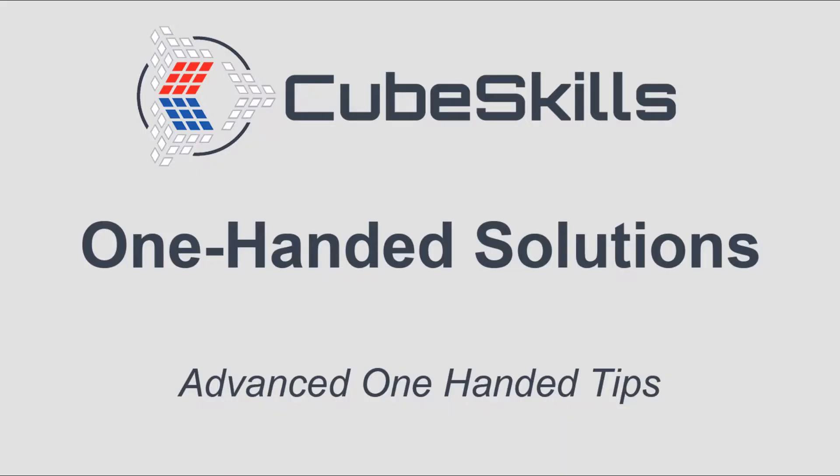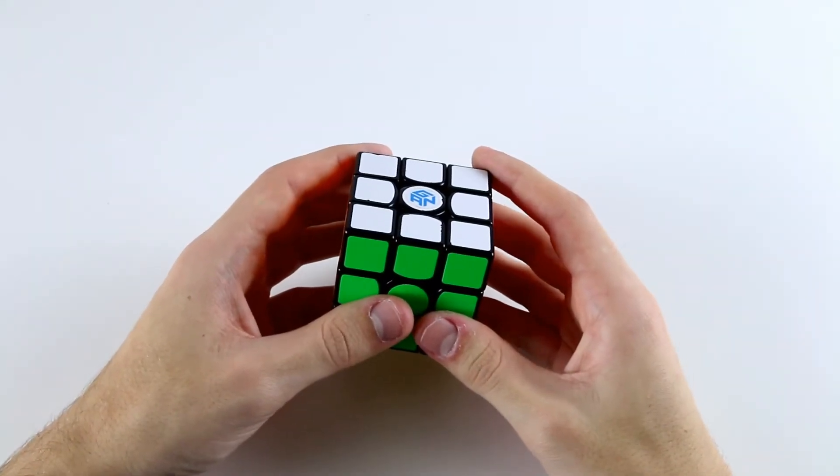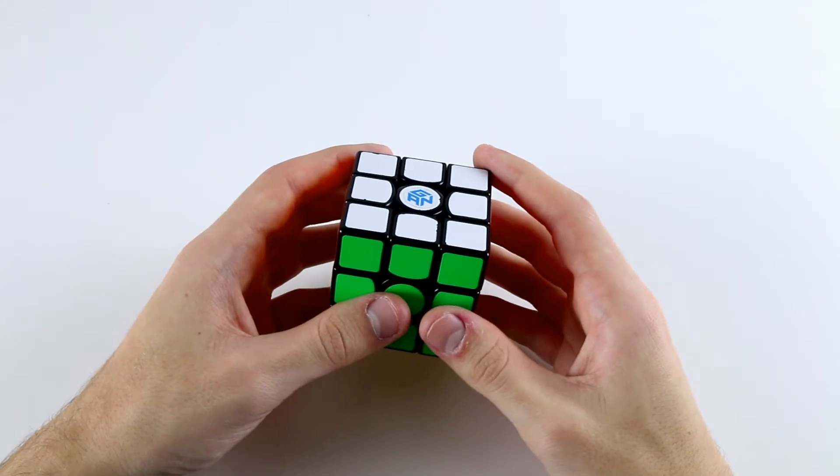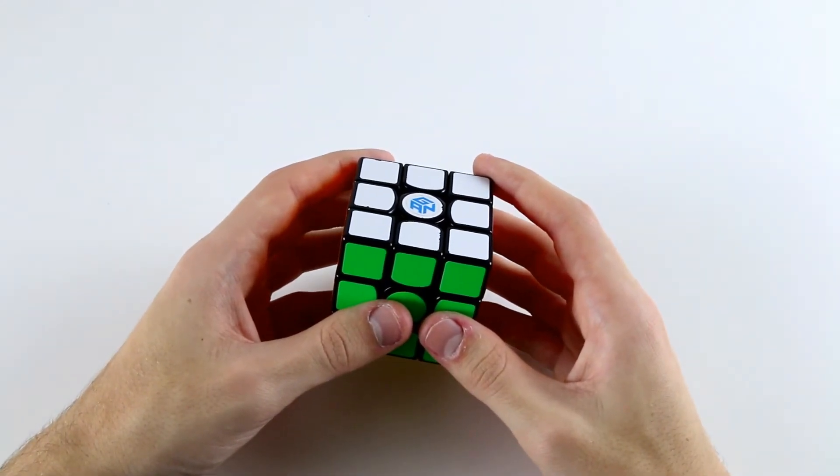Here are some overarching thoughts on one-handed solutions in general and how they vary from two-handed solutions. This is just a brief overview of my thoughts on one-handed solutions, and in the videos after this I'll go into more detail on some of these points and give more specific examples.